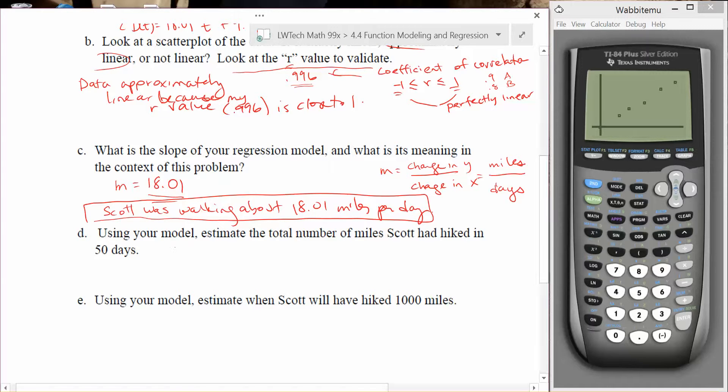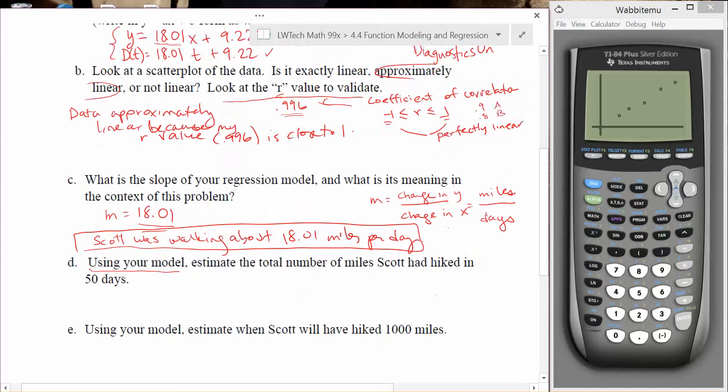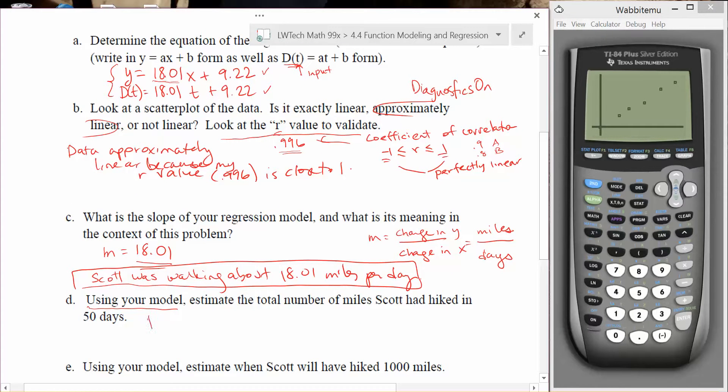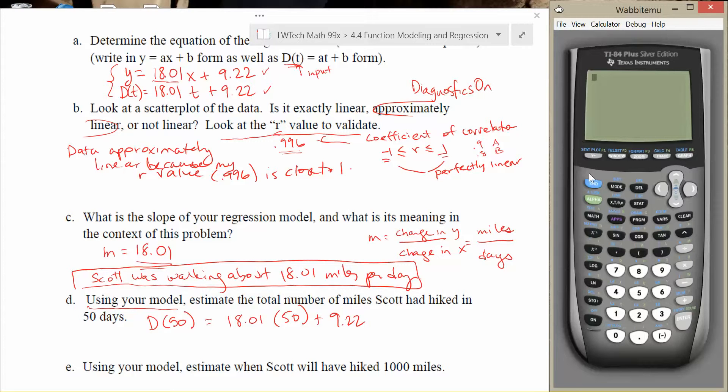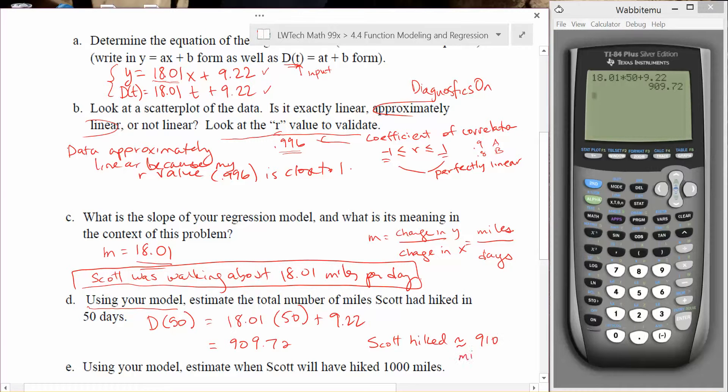The next problem here asks us to use our model, and again we want to, so we're using that formula that we found on the calculator. We'd like to estimate the total number of miles that Scott had hiked in 50 days. So just go back up here to our equation. We have D of T, so we want to find D of 50, so we're going to put 50 in for the time. And when we do that, we're going to get 18.01 times 50 plus 9.22. So I'd like to evaluate that. If you hit the clear button or second mode, we can get back to a regular calculator screen, and then we can just plug this equation in. 18.01 times 50 plus 9.22 equals 909.72. That means that Scott hiked about 910 miles in the first 50 days.